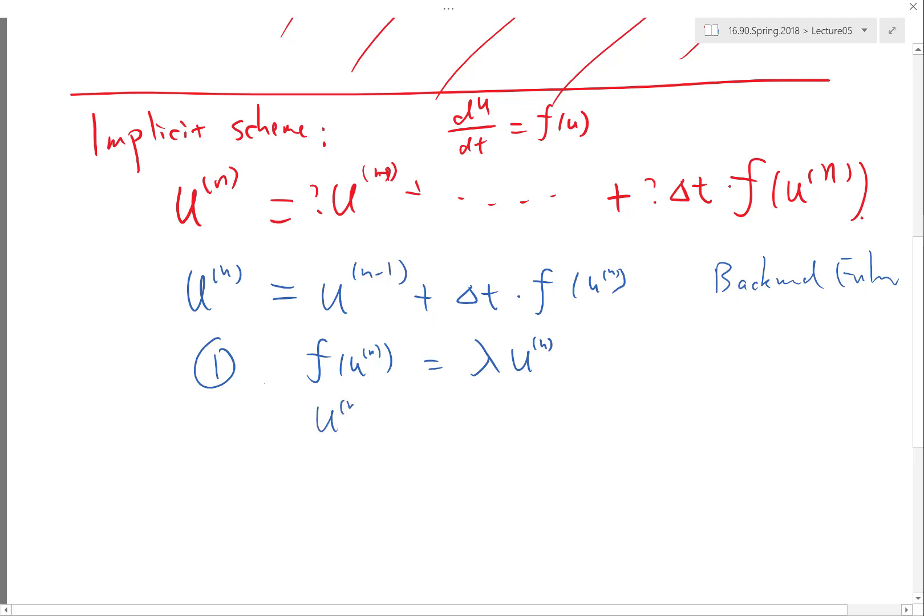I just move this u^n term to the left hand side, so what I get is u^n - Δt times λ of u^n equal to u^(n-1). So u^n is simply equal to u^(n-1) divided by 1 minus Δt λ. Easy.